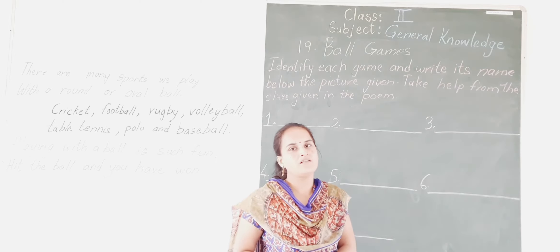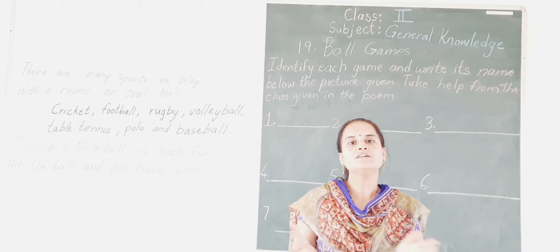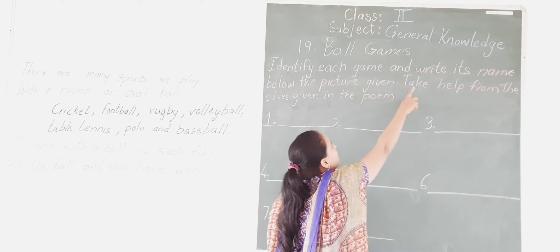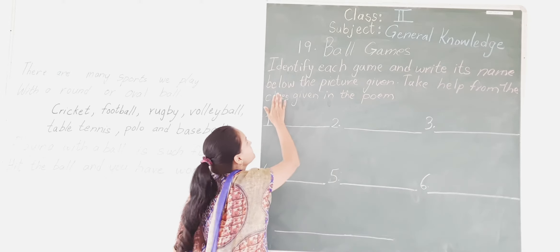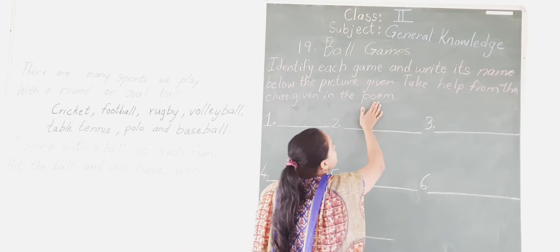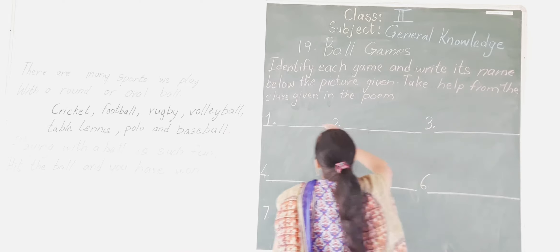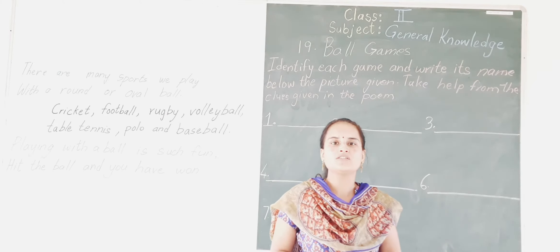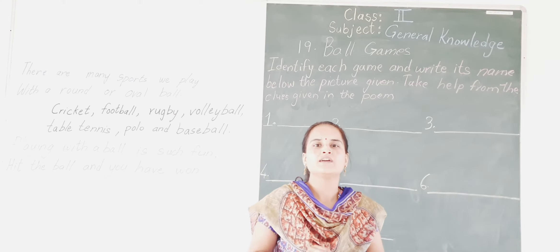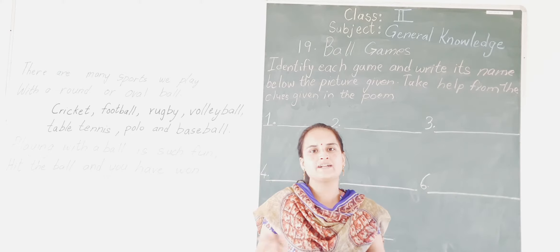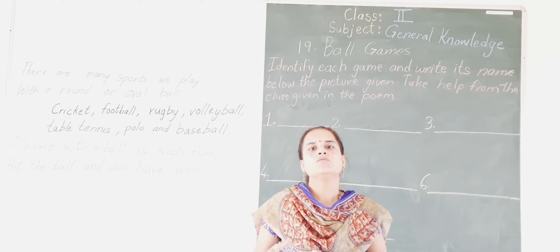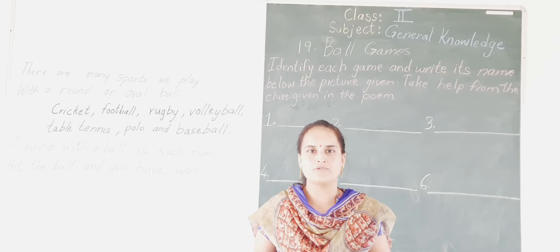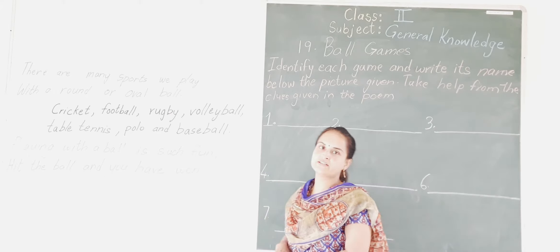Let us see the question given in the exercise. Identify each game and write its name below the picture given. Take help from the clues given in the poem. Can you see at the bottom there is a poem in a bubble? We will read that poem and from it we will look at the picture and identify the name of the ball game. Now let us read the poem.